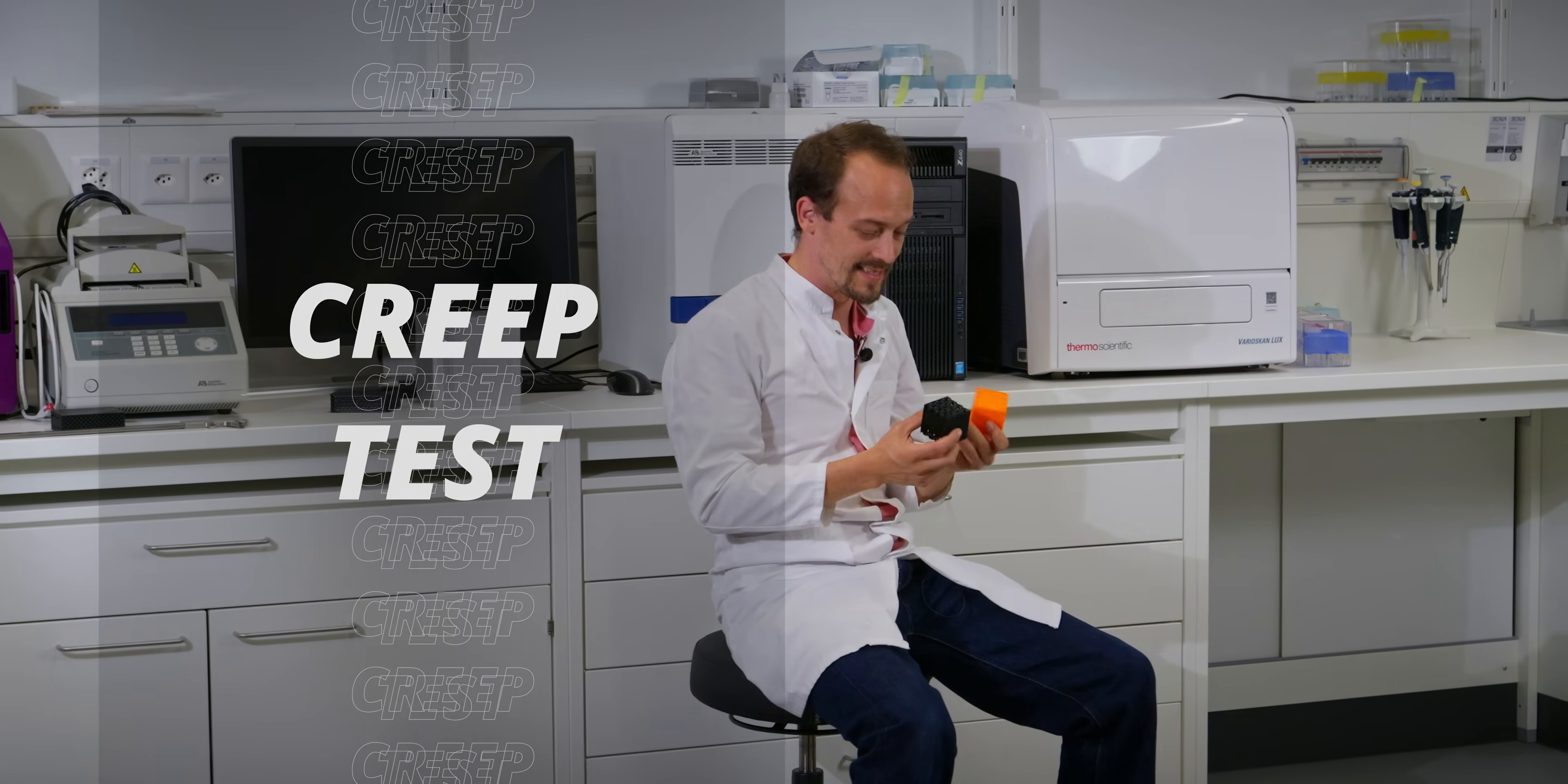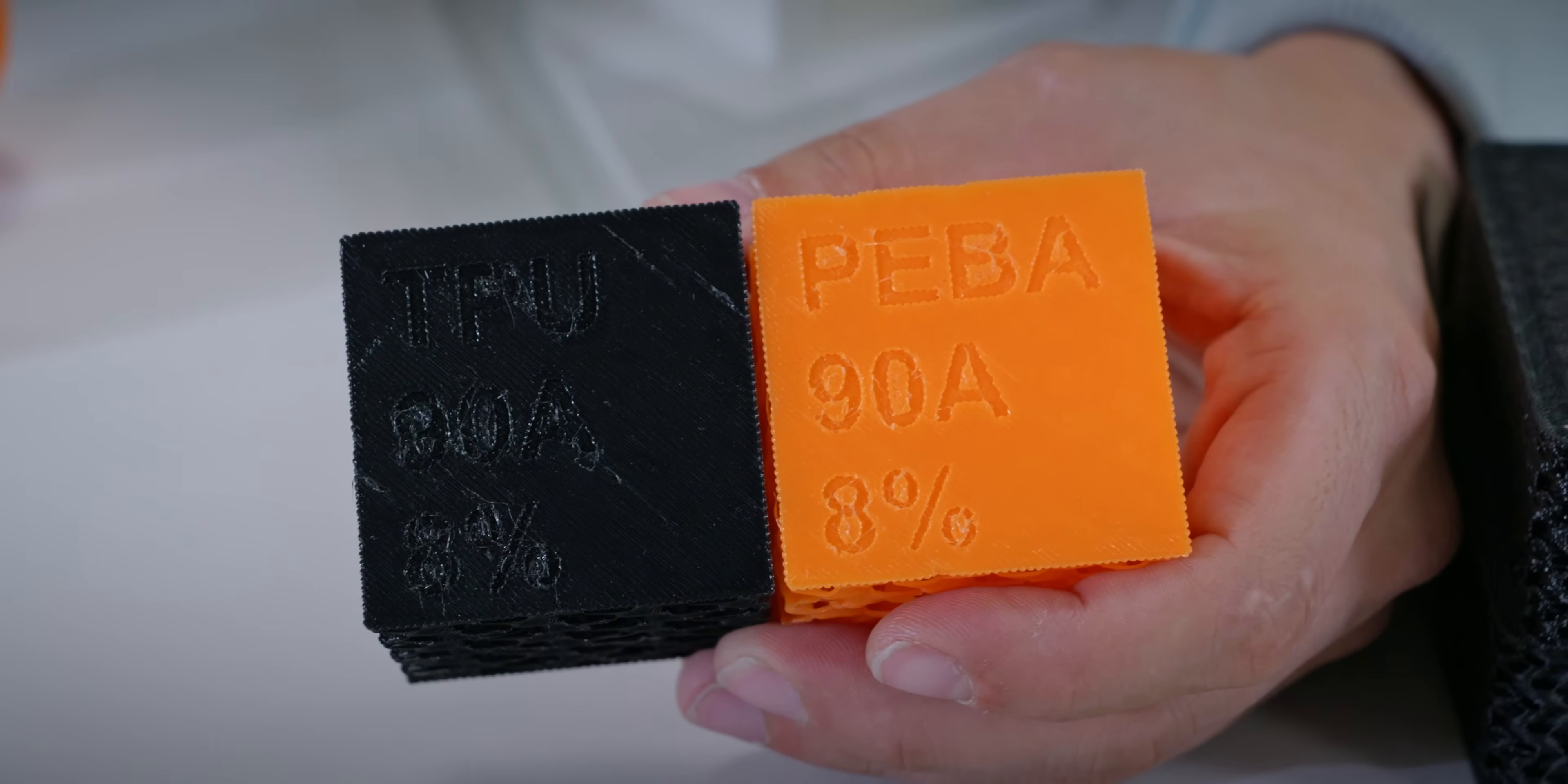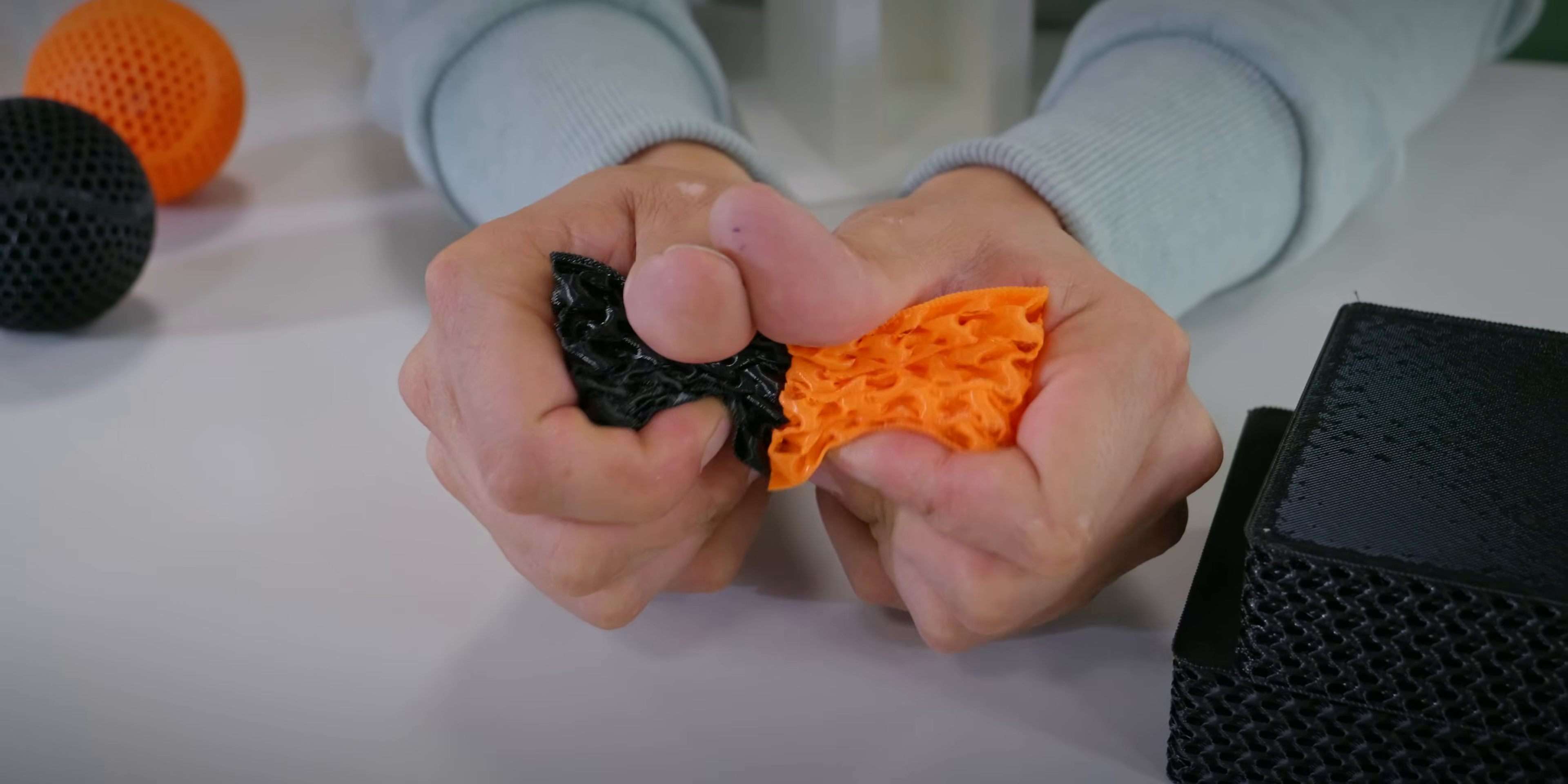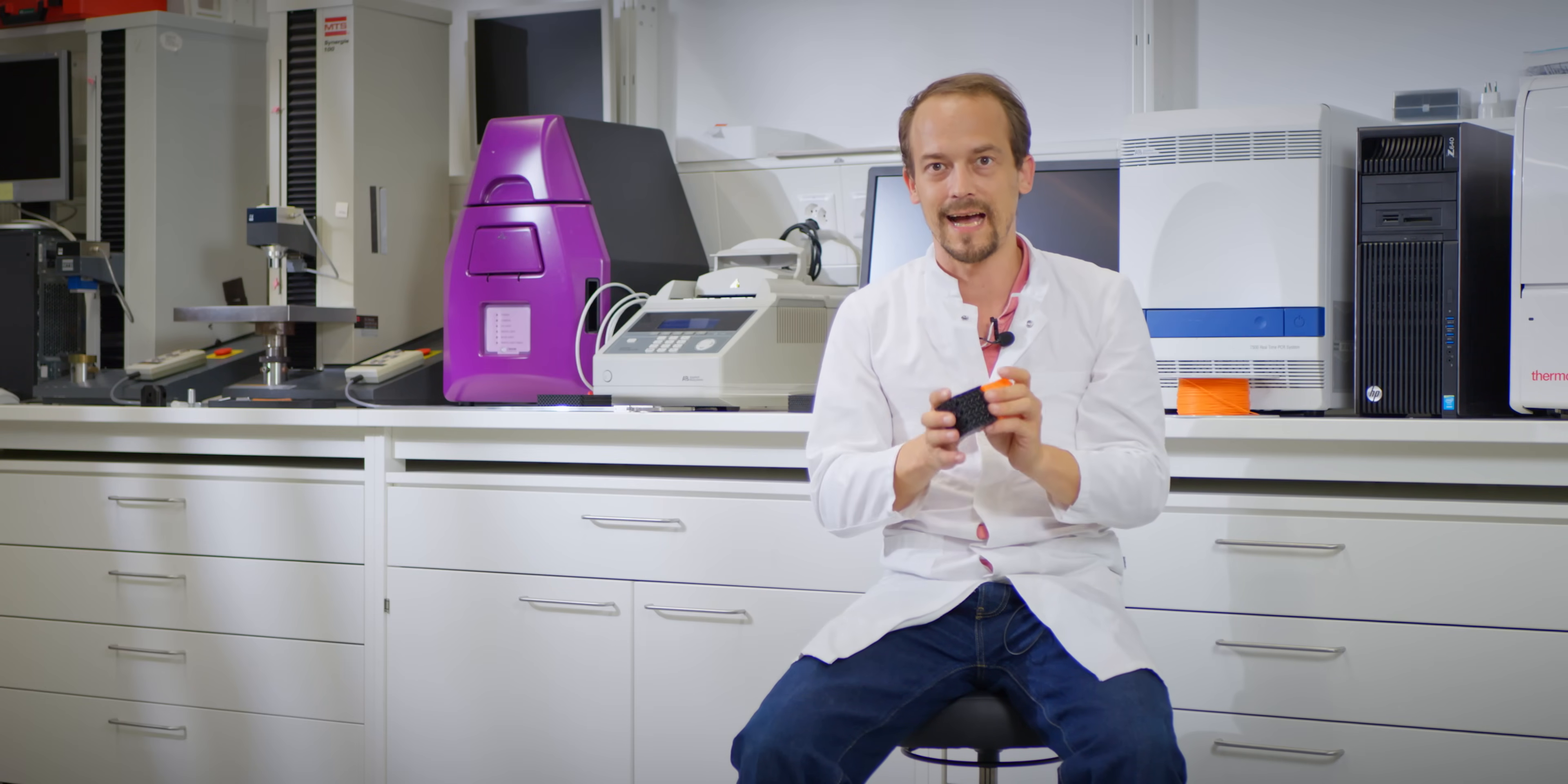I want to test the claim about creep resistance. So I printed these two cubes. Both of them are made from its material of 90A shore hardness. So this is a TPU 90A cube with about 8% infill. So it has a nice oomph to it, like a little springiness. And this one is the same exact model. And it's also 90A. And oh, you can already feel like how fast it bounces back.